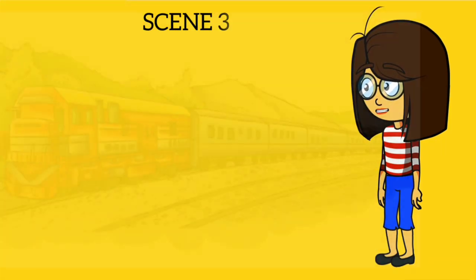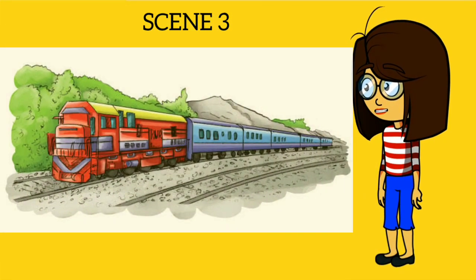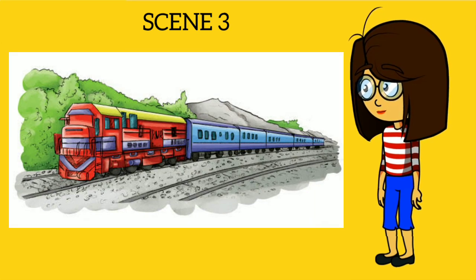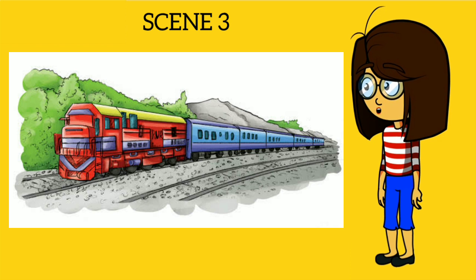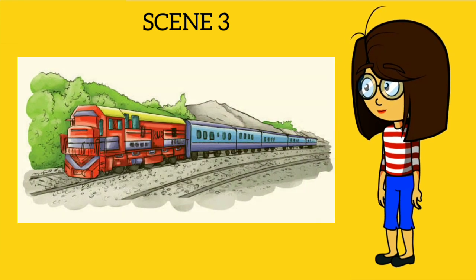Scene 3: When there are signals of the train arriving, Lachmi washes her hands and proceeds towards the Zenana compartment. She gives two annas to the coolie for carrying her luggage and immediately dismisses him. After taking a seat in the Zenana compartment, Lachmi opens her box of betel leaves and puts two in her mouth. Gradually her mouth and cheeks bulge.